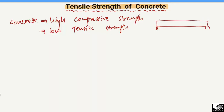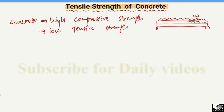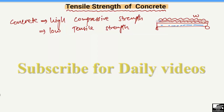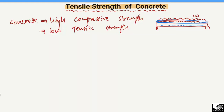For example, consider a beam. When this beam is loaded by any uniformly distributed load or another type of load, we have compression in the top portion of the beam and tension at the bottom of the beam. Since concrete has high compressive strength, the compressive load is taken by the concrete, while the tensile strength of concrete is low.